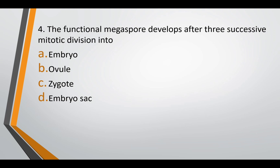Question four: the functional megaspore develops after three successive divisions into — embryo, ovule, zygote, or embryo sac. The correct answer is option D — that is embryo sac.